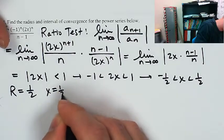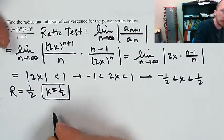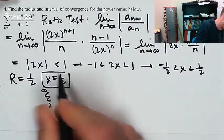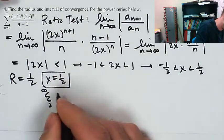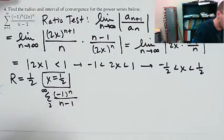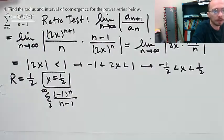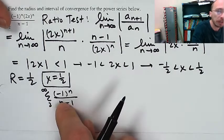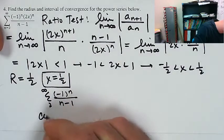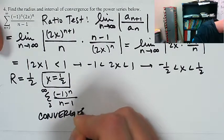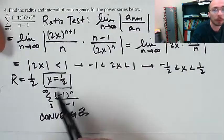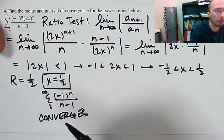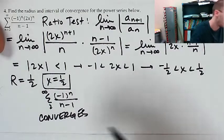Checking x equals one half: the series becomes the sum from 2 to infinity. When x is one half, I've got 1 to the n — that's just 1 — so it's negative 1 to the n over n minus 1. This converges by the alternating series test: the terms are alternating, they are decreasing in absolute value, and their limit is 0. Therefore, this converges. It converges because it's alternating, the absolute value of the terms is decreasing, and the limit of the terms is 0.